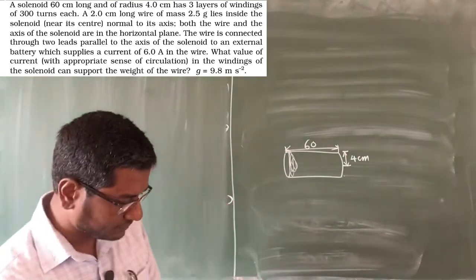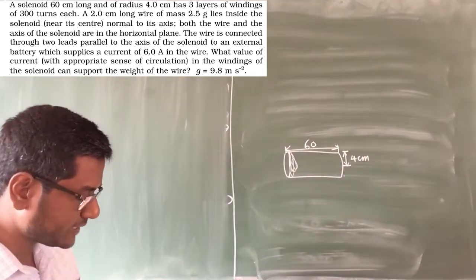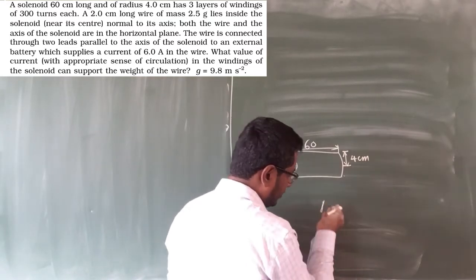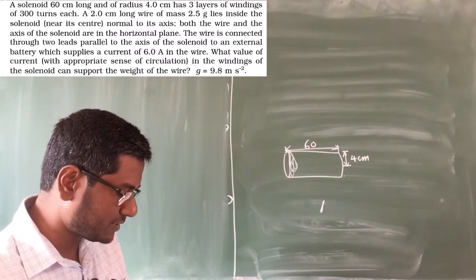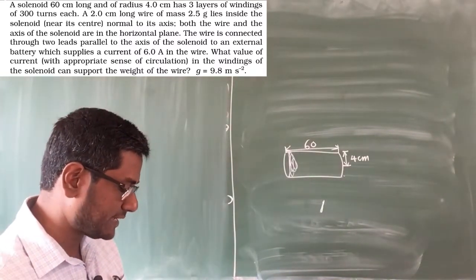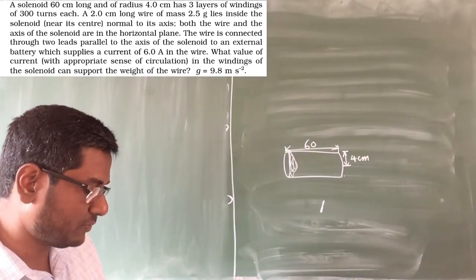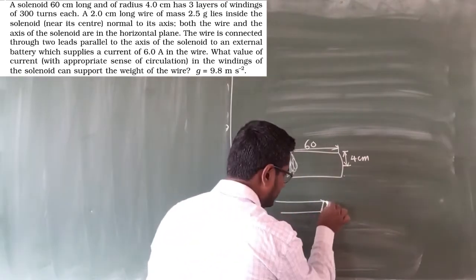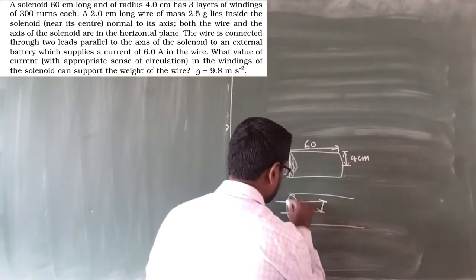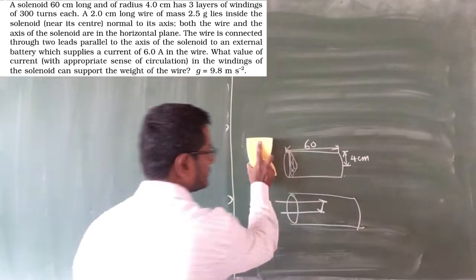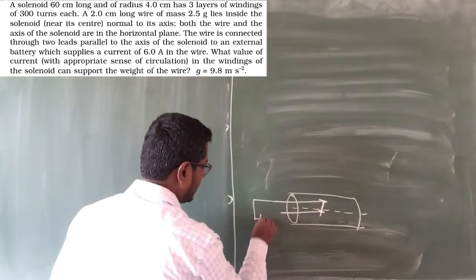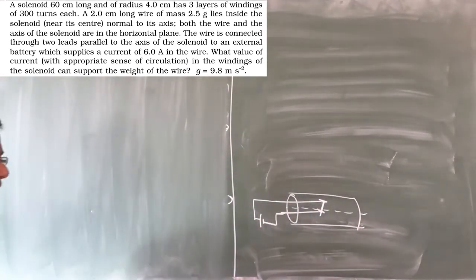So totally there are 3 layers of winding. A 2 cm long wire of mass 2.5 grams — I will draw it separately. It is horizontal, 2 cm long, and lies inside the solenoid near its center. Both the wire and the axis of the solenoid are in the horizontal plane. The wire is connected through two leads, and those leads are connected to an external battery which supplies a current of 6 ampere in the wire.